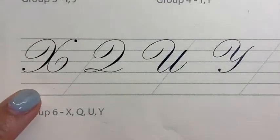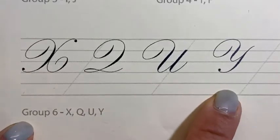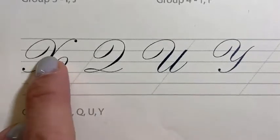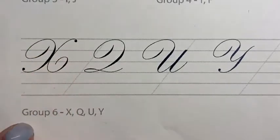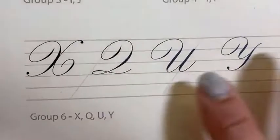Today we're going to do group six with X, Q, U, and Y. The similarity here is the indirect oval, so we're going to learn about all these. If you're writing with me, hopefully you have a guide paper — it's always useful to have a guide because otherwise it's hard to figure out all the proportions.